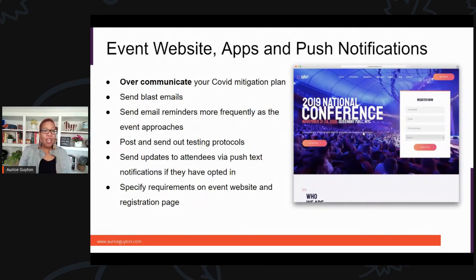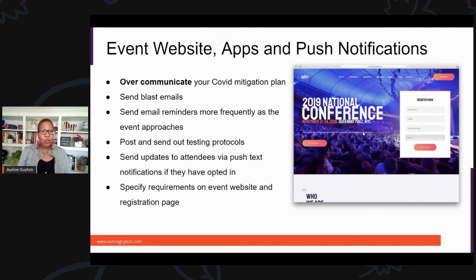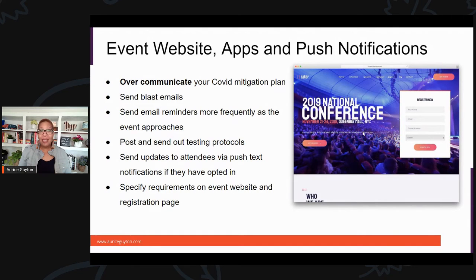Over-communicate your COVID mitigation plan — over-communicate, because there will be people who say they didn't get that email. So send the email out multiple times, multiple ways. Send e-blasts out. Send email reminders more frequently as the event approaches — maybe one email a month, reminding them to bring their mask or get a COVID test before they arrive. Whatever your requirements are, make sure you over-communicate that information.